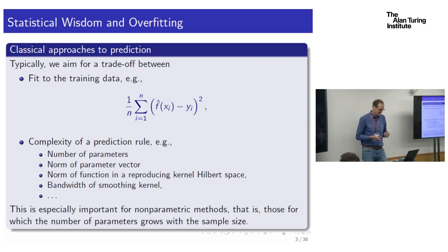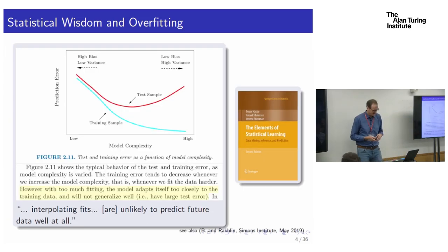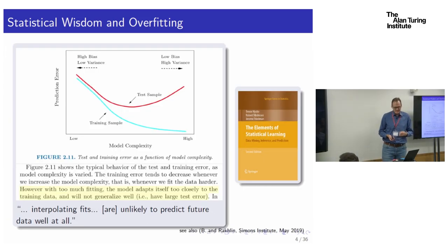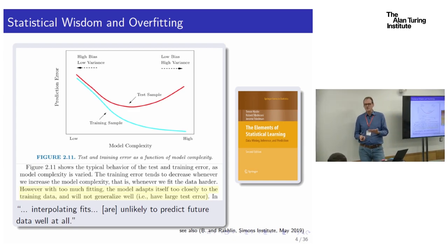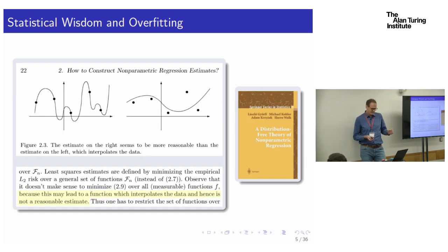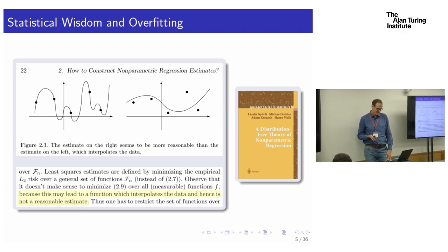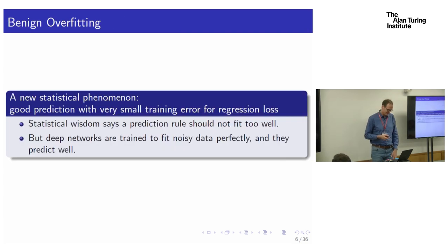It's really rather striking not to be trading these two off. In classes, these are examples we give our students: if you're interpolating the data with a polynomial, that's a bad thing to do, because it's noisy data and you'll have bad predictive accuracy.